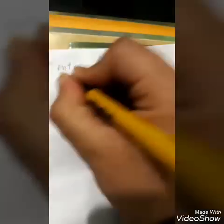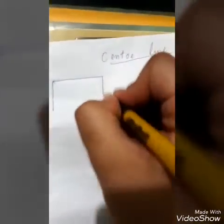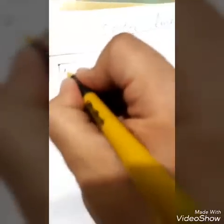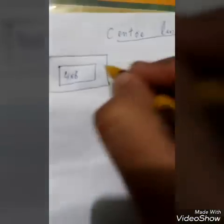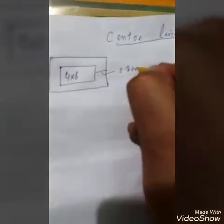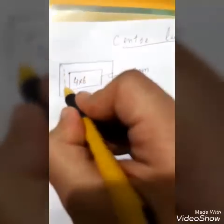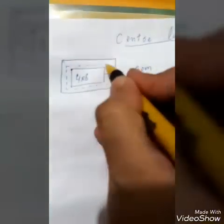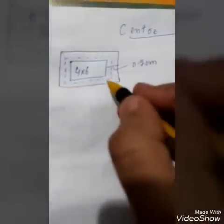Let's do it. Centerline method — let's take the example of a single room. Suppose here we have a room with dimensions four by six meters: four meters along the short wall and six meters along the long wall. The thickness of the wall is 0.20 meters. Here we have a line — as you know, this line is called the centerline, and the centerline is just an imaginary line.